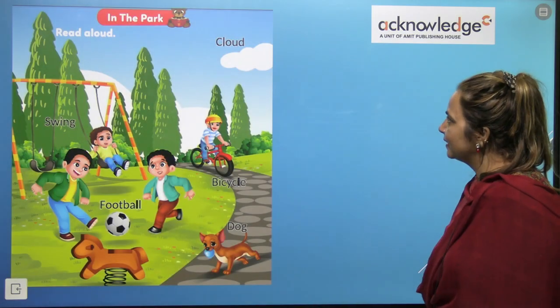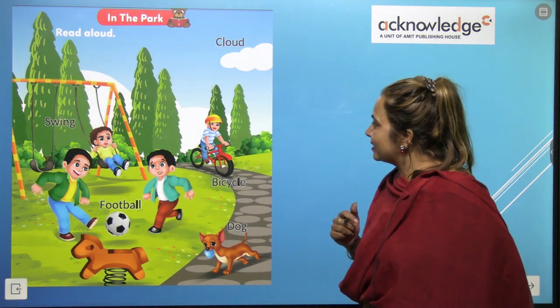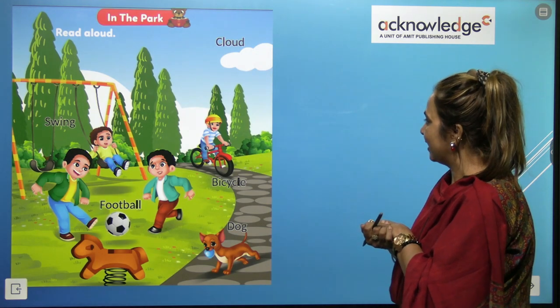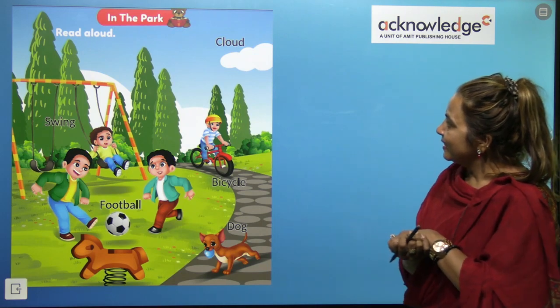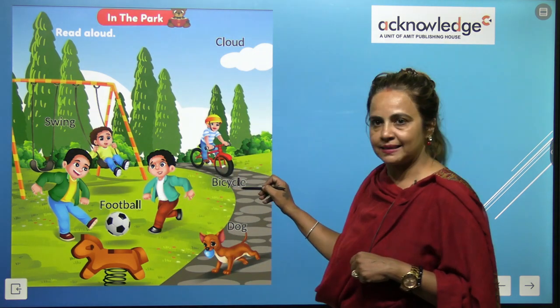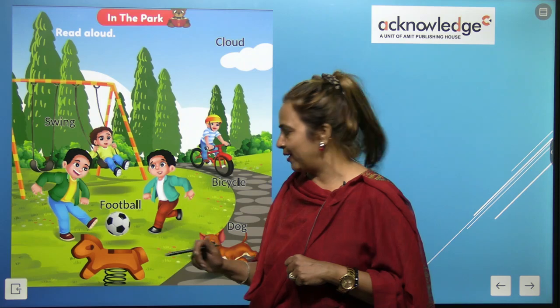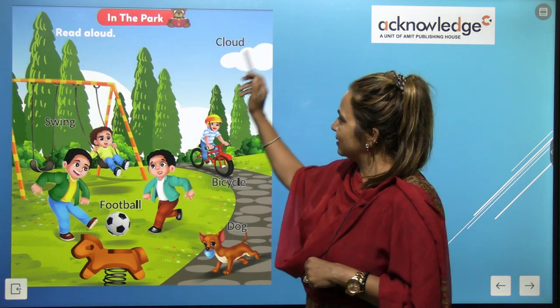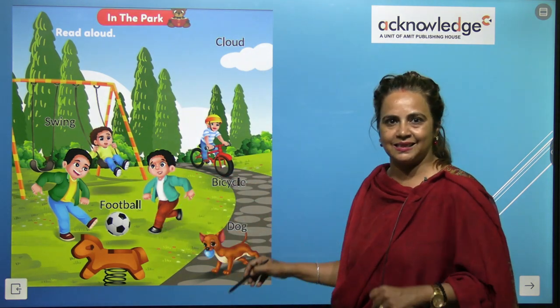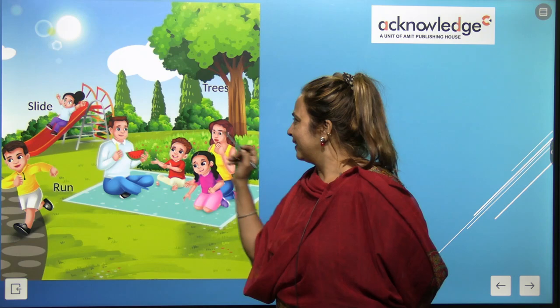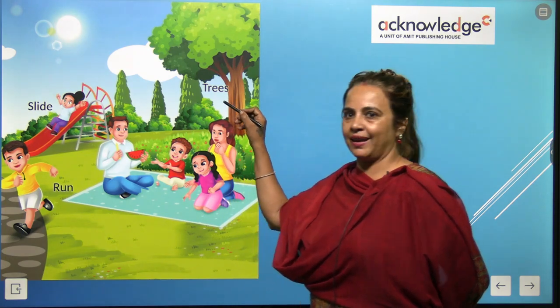In a park, see, this is a park and see how many children are there and what is in this picture. It's a picture of a park, right? So this is swing. Jhula. Swing. This is bicycle. This is football. And dog. Cloud. Swing. Football. Bicycle. Dog. Slide. Jhula. Trees. Trees. Slide. Trees. Run.